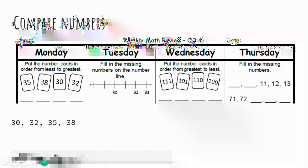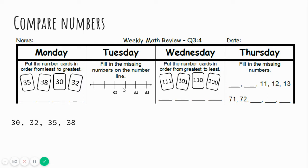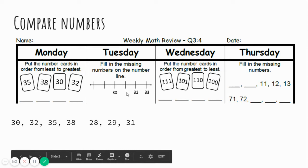Fill in the missing numbers on the number line. We got 30, blank, 32, 33. Hmm, what comes before 30 and after 30? I know that 31 is in between 30 and 32, so this would be 31. But what about these two? Let's count backwards 30, 29, 28.